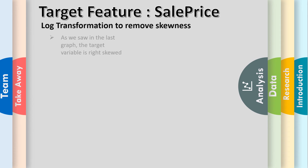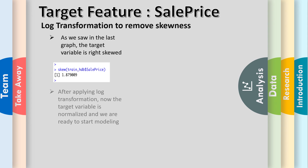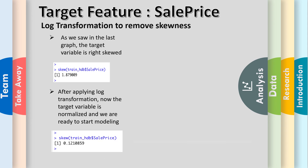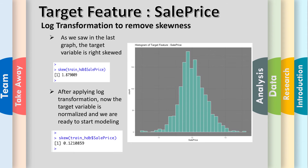Thank you, Shivam. As you saw in the previous graph, the target variable was right-skewed, so we are going to apply a log transformation on it to normalize it. Now we are ready to model.